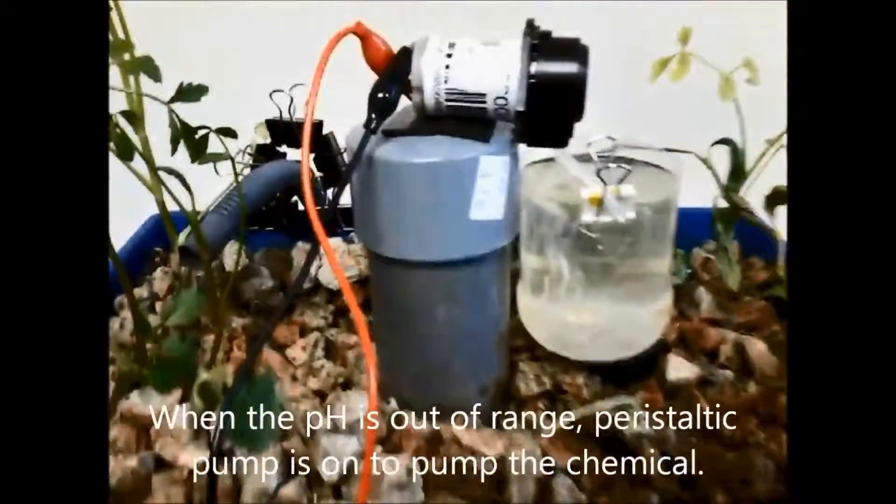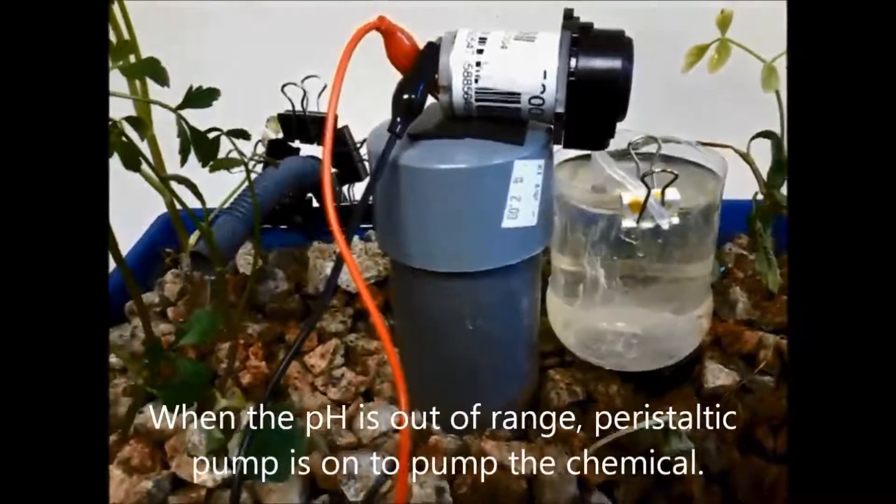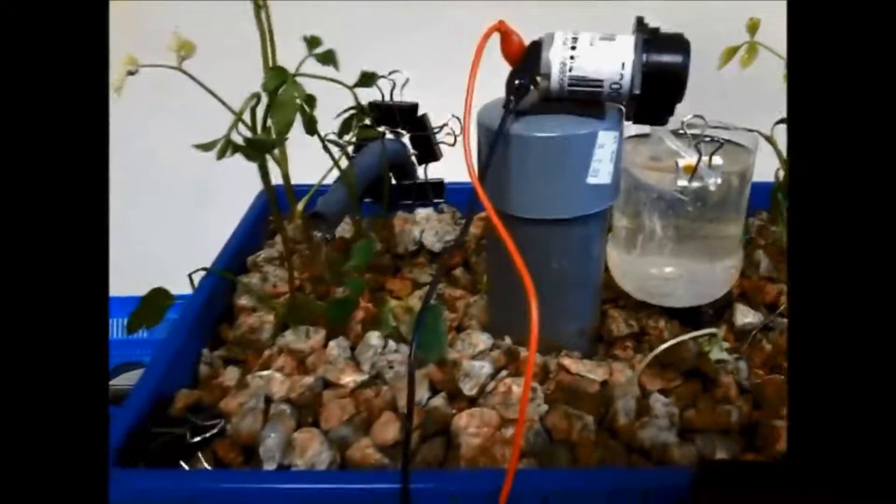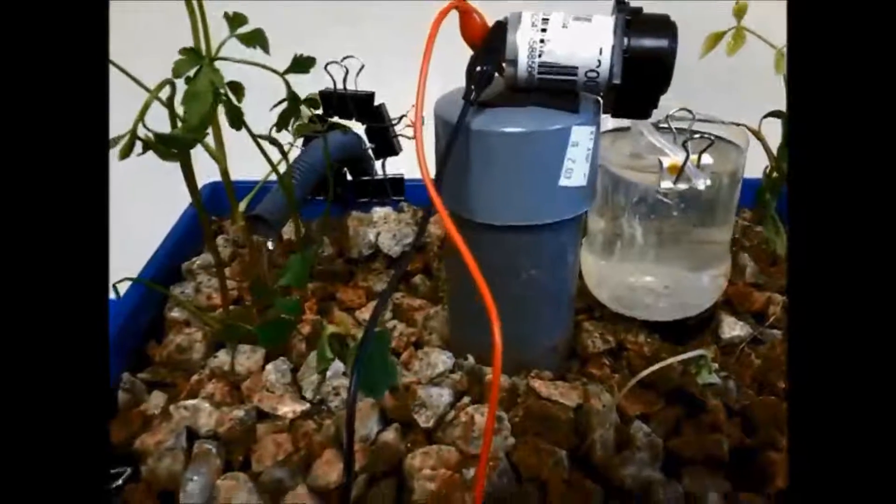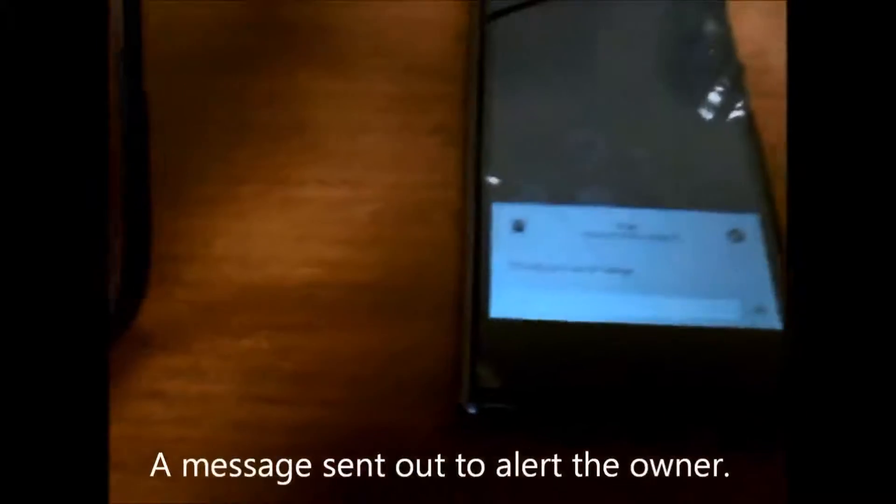When the pH is out of range, the peristaltic pump turns on to pump the chemical. A message is sent out to alert the owner.